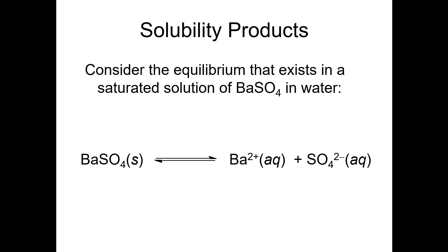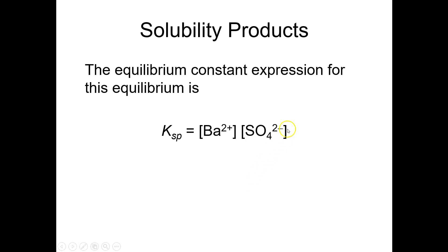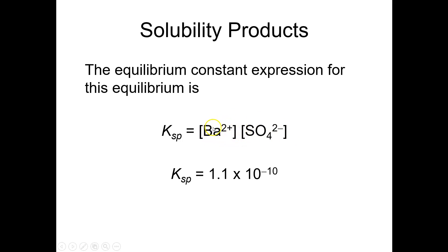Another example is barium sulfate, a compound often made as a precipitate in various lab experiments. Because the coefficients of barium and sulfate are both 1, the KSP expression is just the concentration of barium times the concentration of sulfate. For that reaction, KSP equals 1.1 × 10⁻¹⁰. It's just coincidental that the first two examples we looked at have similar solubilities. So the KSP expression only includes the products because the reactant is a solid — no denominator.